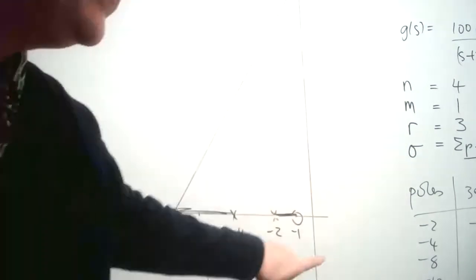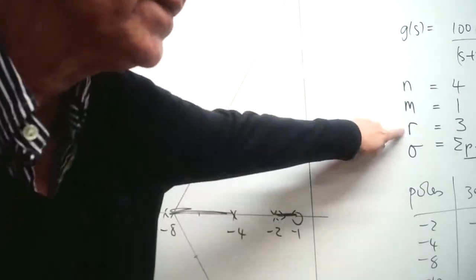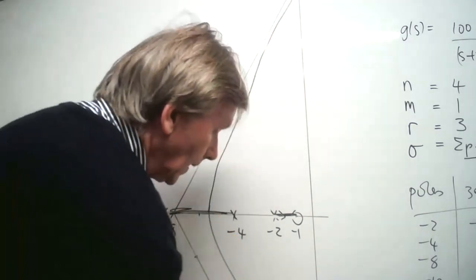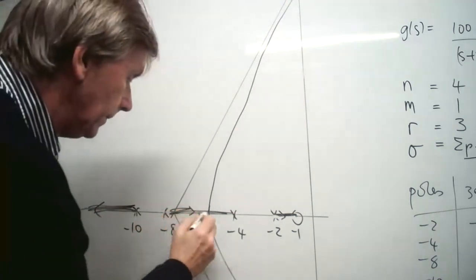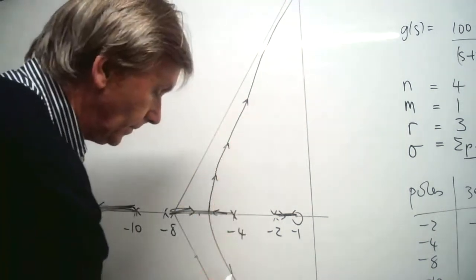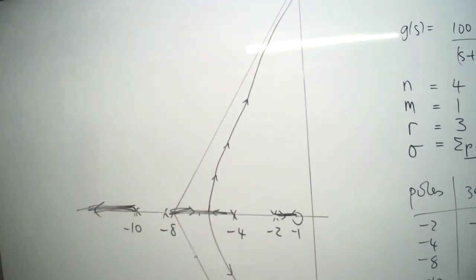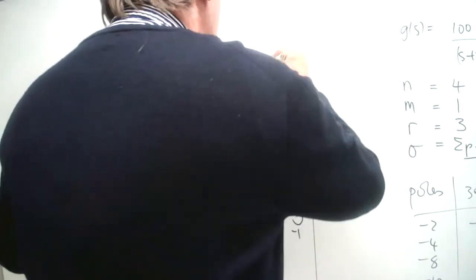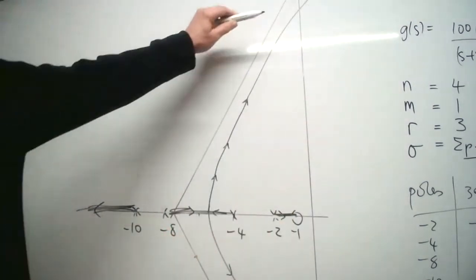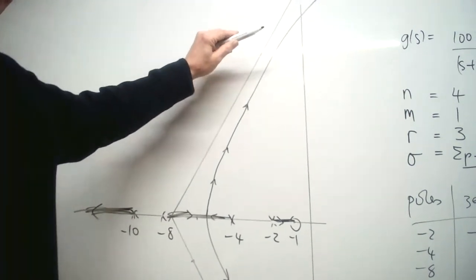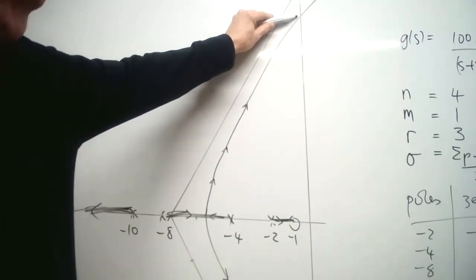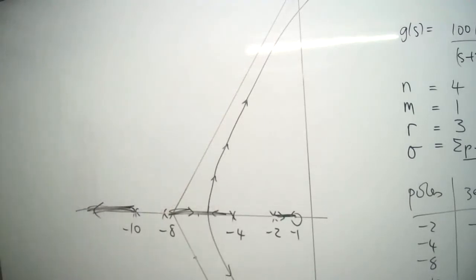One pole goes to the finite zero at minus one, and three poles go to the infinite zeros along the asymptotes — two poles come together and go off along the ±60° asymptotes, and one pole goes along the 180° asymptote. That completes the sketch of the root locus. We can see it crosses the imaginary axis at some point — that's the point of instability we want to find.